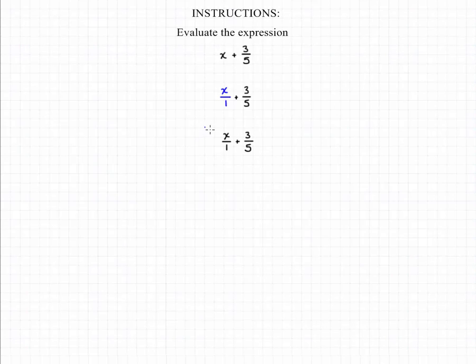Now we need to convert that into a fraction with 5 in the denominator, and we can do that by multiplying by 5 over 5. We then end up with 5x over 5.